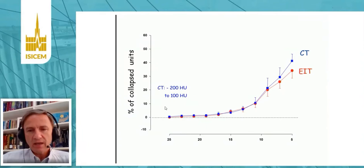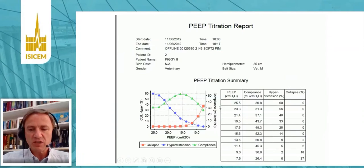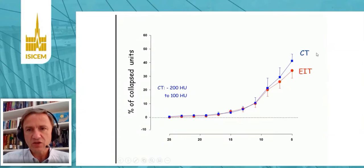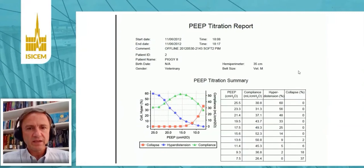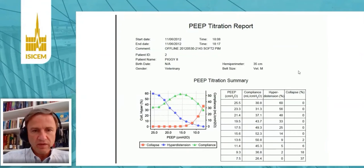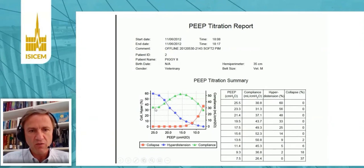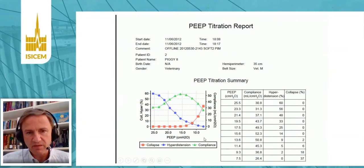Later on, we did some comparison of collapse estimates by CT and by EIT in experiments in pigs, and we showed a very nice correlation between CT estimates and EIT. Nowadays, some devices can provide automatic PIP titration with an online display where you see lung collapse in red, hyperdistention in blue, and compliance of the respiratory system in green. Then you can pick a certain PIP level that gives you the best compromise between collapse and hyperdistention.